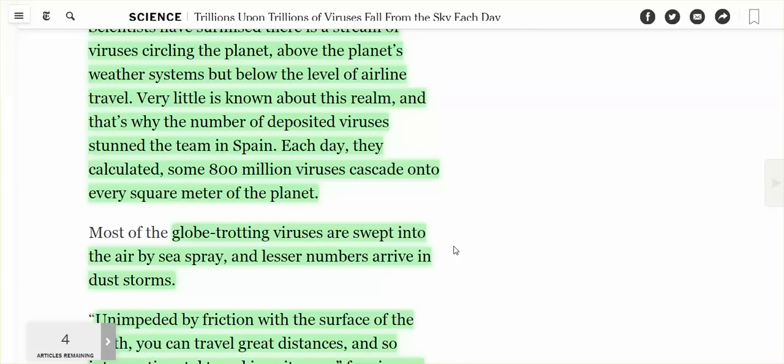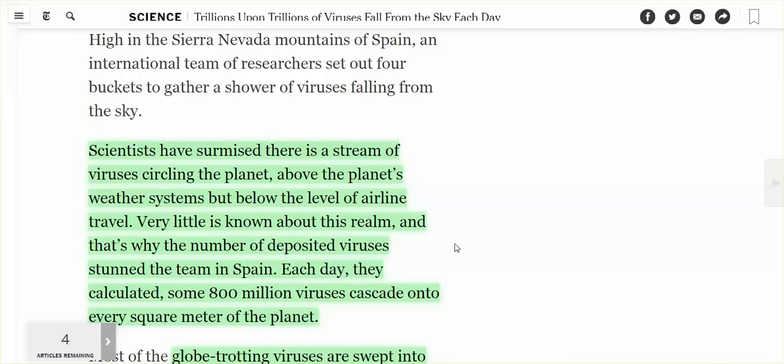Globe-trotting viruses are swept into the air by sea spray. So they're swept into the air by sea spray and they land above the weather system but below airline travel.